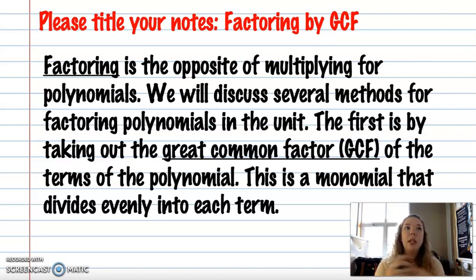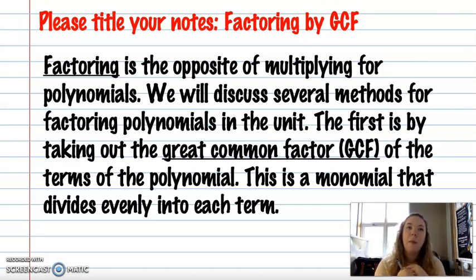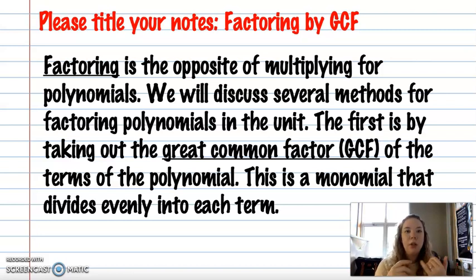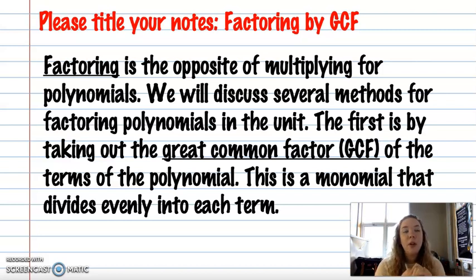Factoring is really the undoing of multiplication, or the opposite of multiplication when we're talking about polynomials. So it's essentially division, trying to break it back into smaller pieces, but we're calling it factoring. So factoring is the opposite of multiplying for polynomials. We're going to discuss several methods for factoring polynomials in this unit, so this is just the first of many.